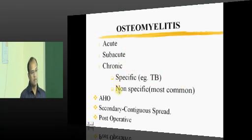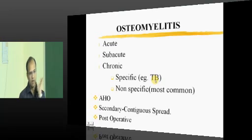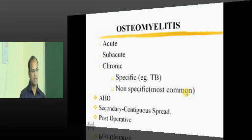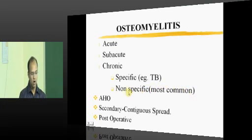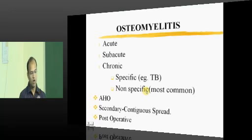The second classification is based on the causative organism, which has an important role in treatment. We classify into specific type — that is tuberculosis — and nonspecific type, which includes all other organisms from Staphylococcus to fungi as described in microbiology. Nonspecific osteomyelitis is more common than specific. Specific, for your purpose, means tubercular osteomyelitis.